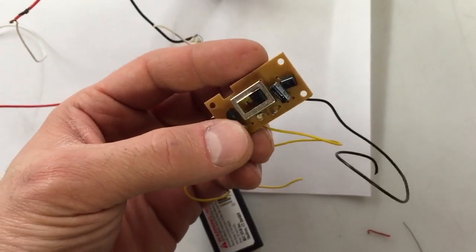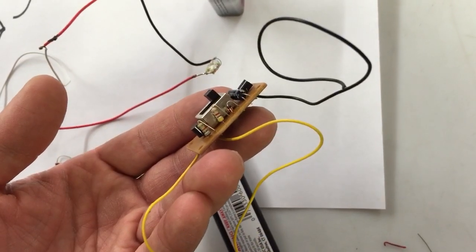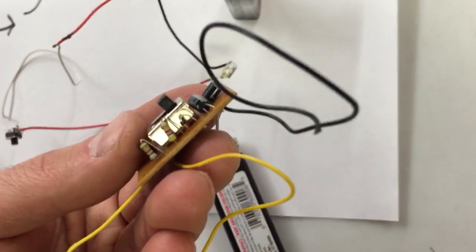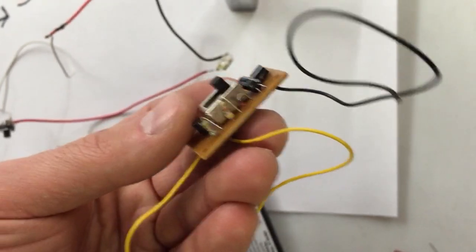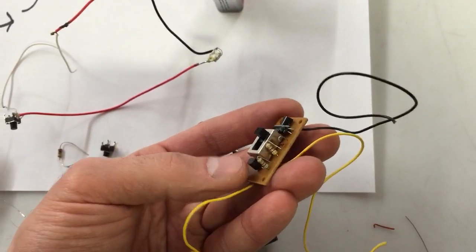I usually get them off of old circuit boards. You can open like an old broken VCR, DVD player, something like that, and you could find resistors. Most of the time they'll work just fine, whatever size resistor they are. Like I said, you could just try—it's not going to hurt.